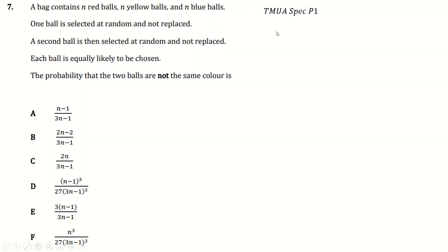Okay, so this is the first and second to last Tamura probability question that's ever been asked. N, yellow, red, and blue balls. One is selected, not replaced. Another selected, not replaced. Each ball is likely to be chosen. What's the probability? Not the same color. So I just want to show you the quick trick here of not working out all of the different branches of the tree.